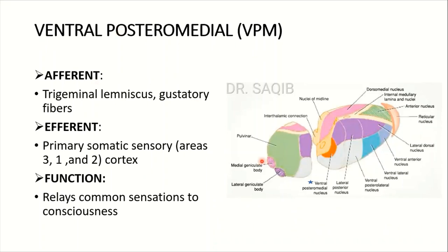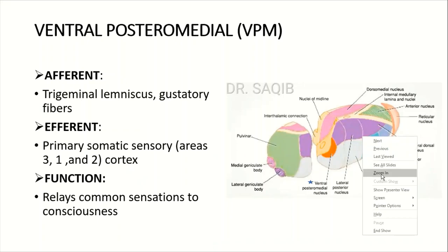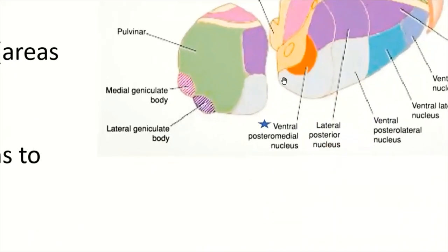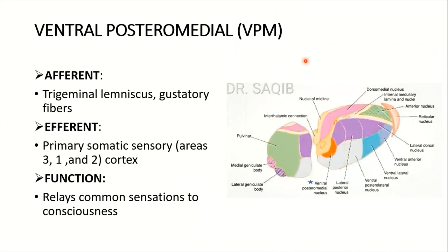The ventral posteromedial nucleus (VPM): its afferents are the trigeminal lemniscus and gustatory fibers. Its efferents go to the primary somatic sensory cortex, Brodmann areas 3, 1, and 2. Its function is to relay common sensation to consciousness.